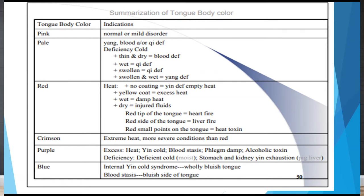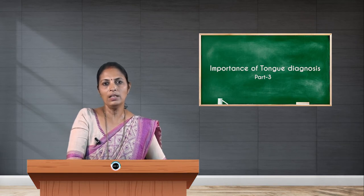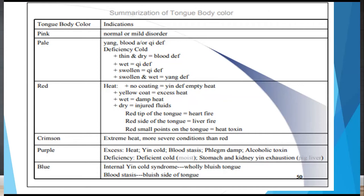To summarize tongue body colors: a pink tongue reflects normal or mild disorder. A pale color represents yang deficiency, blood deficiency, or qi deficiency, and also reflects deficiency of cold. A thin and dry tongue indicates blood deficiency, while a wet tongue is associated with qi deficiency.